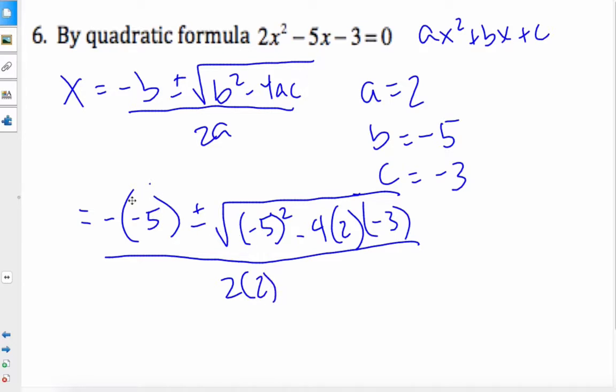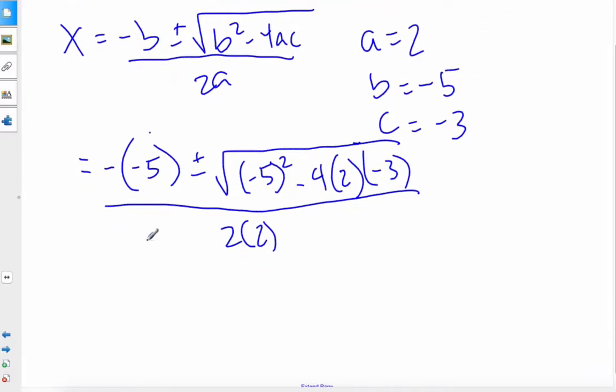Okay, so now from that, if we consider this, we're going to start to simplify. I get positive 5 plus or minus the square root of negative 5 times negative 5 is 25. This is 4 times 2 is 8, times 3 is 24. And there's 2 negatives, so it ends up being a positive value, divided by 4.